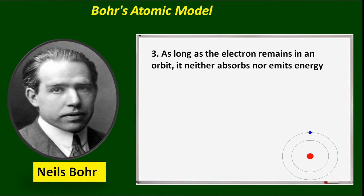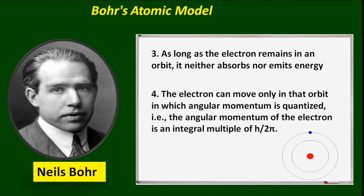As long as the electron remains in an orbit, it neither absorbs nor emits energy. The electron can move only in that orbit in which angular momentum is quantized — that is, the angular momentum of the electron is an integral multiple of h/2π, or MVR = nh/2π, for different energy levels.